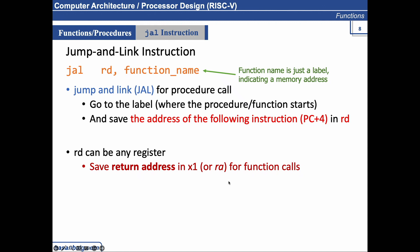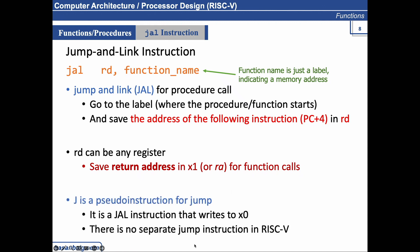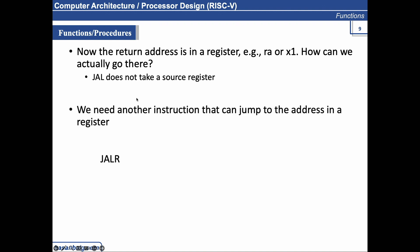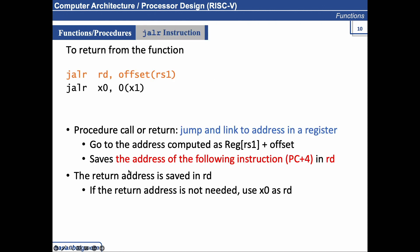To return from a function, we need to go back to the return address stored in a register like x1 (ra). JAL does not take a source register, so we need another instruction for this: JALR — Jump and Link Register. JALR uses the format: offset plus rs1, where rs1 is the register holding the return address. If you do not need to store the address of the next instruction when returning, you simply specify x0 as the destination register.